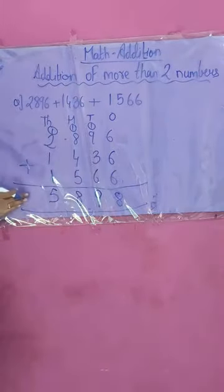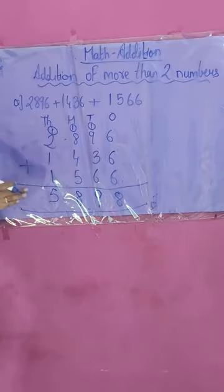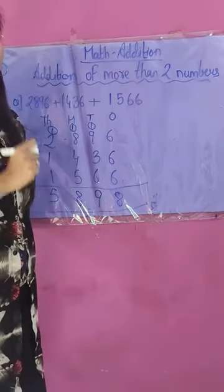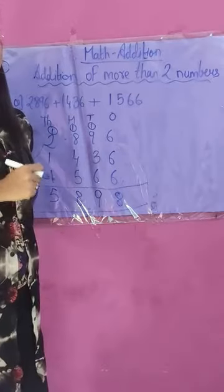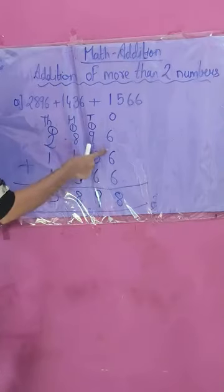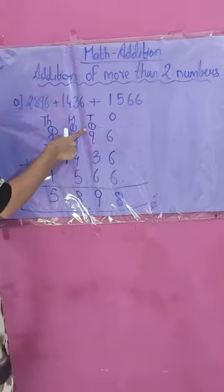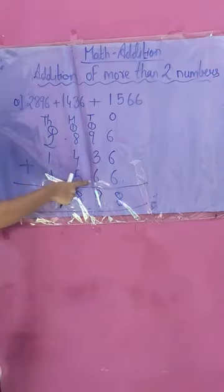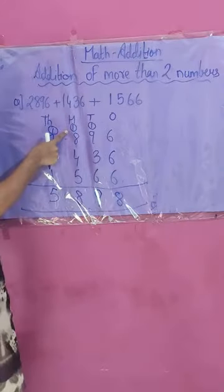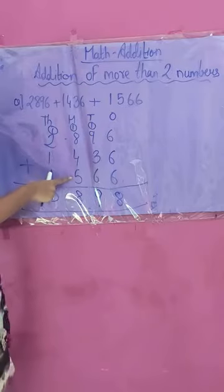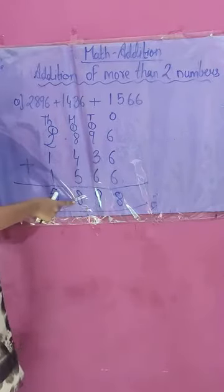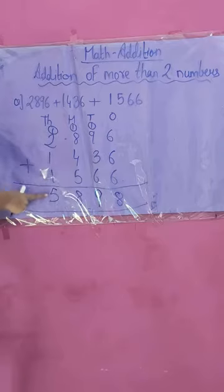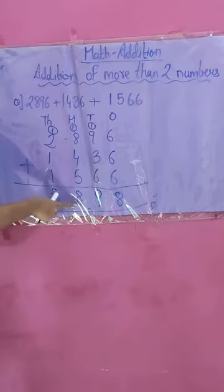In this way we got the answer. After solving, check whether your answer is correct. During exams, most students make the mistake of not checking — they directly submit. It is my request to everyone: whenever you solve any sum, please recheck your answer. Rechecking: 6 plus 6 plus 6 is 18, carry 1. 1 plus 9 plus 3 plus 6 is 19, carry 1. 1 plus 8 plus 4 plus 5 is 18, write 8 carry 1. Then 1 plus 2 plus 1 plus 1 is 5. So the answer is 5898.